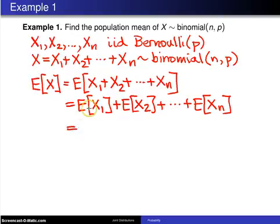This is the expected value of a Bernoulli random variable X1, which has expected value P. This is also a Bernoulli random variable, so it has expected value P. You are just adding up P, N times, and so that sum will be Np.